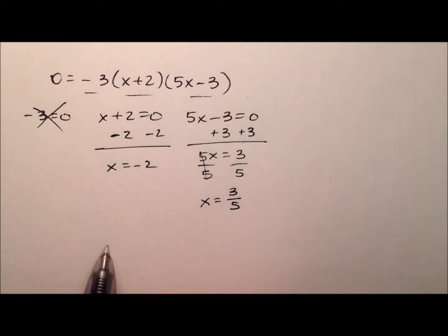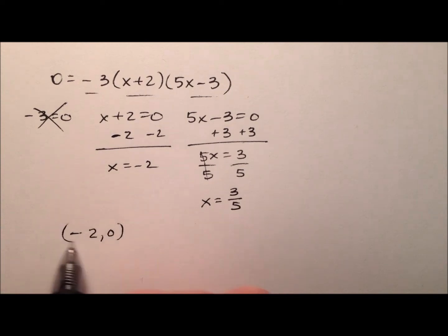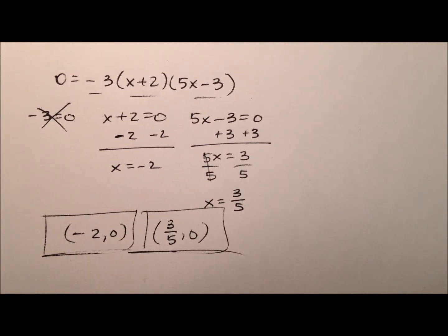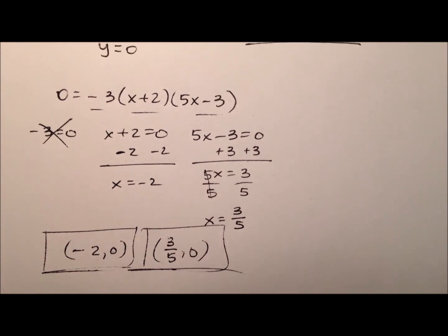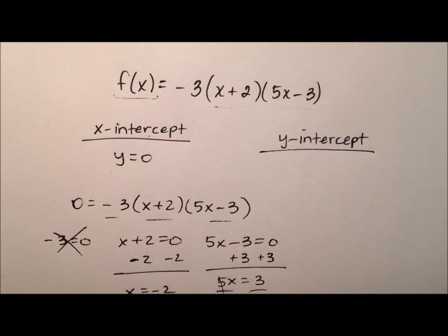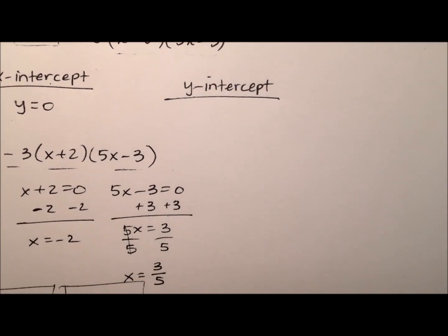All right, so what we can say now, we have these two x-intercepts. They're going to be (-2, 0) and (3/5, 0). So there's one, there's the other. And we know the y is going to be 0, or the y-value or y-coordinate, because we found the x-intercepts by plugging in 0 for that y.